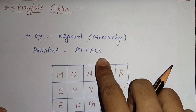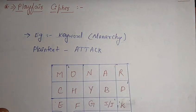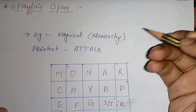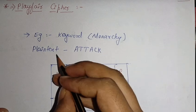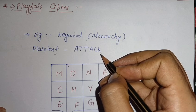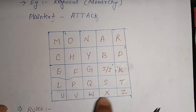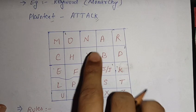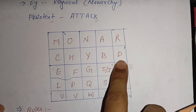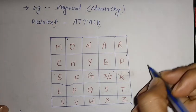We are going to understand this through one example. In this example, we have taken the keyword as 'monarchy' — it could be any word. The plain text is given as 'attack'. First, what we need to do is make a 5x5 matrix; it is compulsory to make a 5x5 matrix for the Playfair cipher.